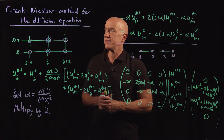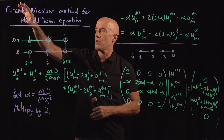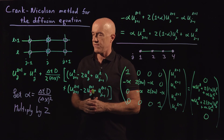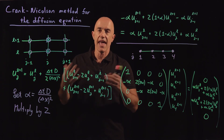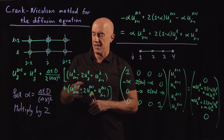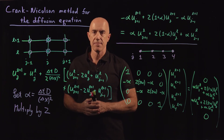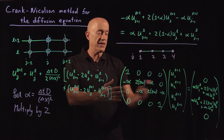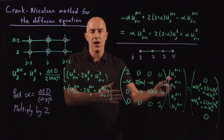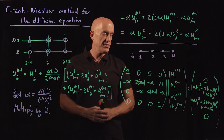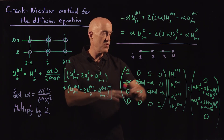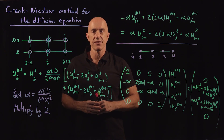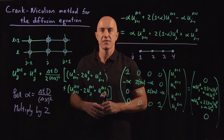To summarize: in this video, I introduced the Crank-Nicholson method for solving the one-dimensional diffusion equation. It's an average of both the explicit and implicit methods, resulting in an unconditionally stable scheme with a tri-diagonal matrix, making it very fast to solve computationally. In the next video, we'll look at a MATLAB implementation of this scheme. I'm Jeff Chasnov — thanks for watching, and I'll see you in the next video.